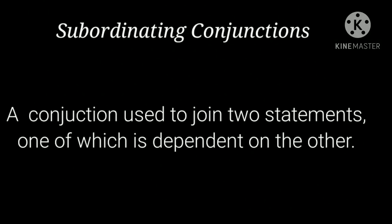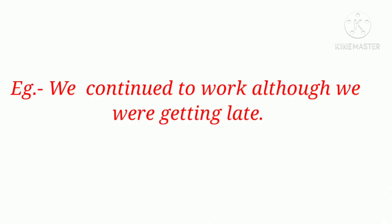Moving to the second kind of conjunction, that is subordinating conjunctions. A conjunction used to join two statements, one of which is dependent on the other, is called a subordinating conjunction. Example: we continued to work although we were getting late. As we can see, one half of the sentence — we continued to work — is not complete, and it depends on the other half — we were getting late. The conjunction used here is 'although'.